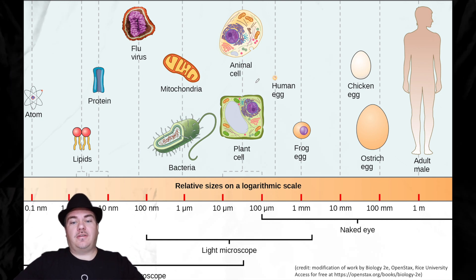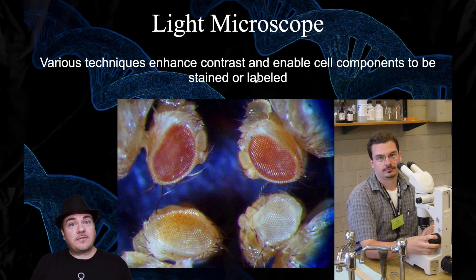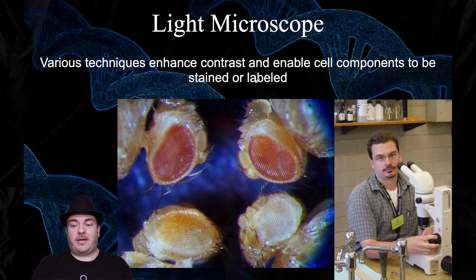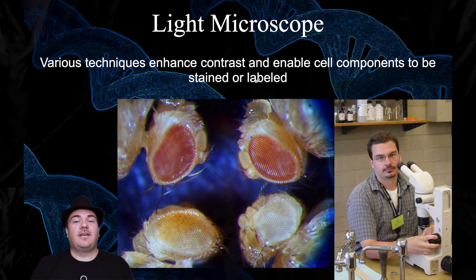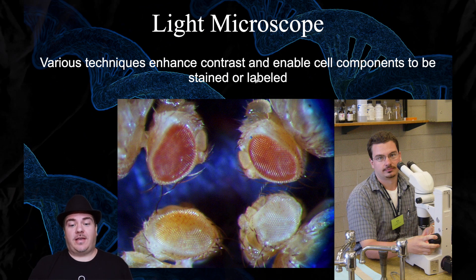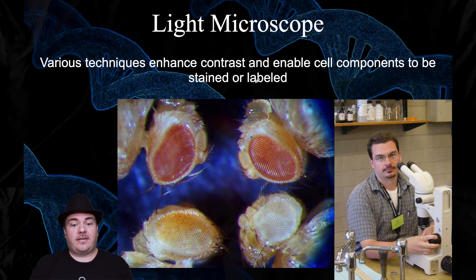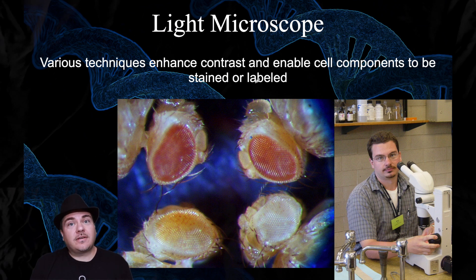Those are some examples of things you might see with a light microscope. There are lots of different types of light microscopes and different techniques you can use. They range from something very basic, like a dissecting microscope — for example, this much younger Dr. Sage is using a dissecting microscope, where you can look at things like the eyes of Drosophila melanogaster, or fruit flies.